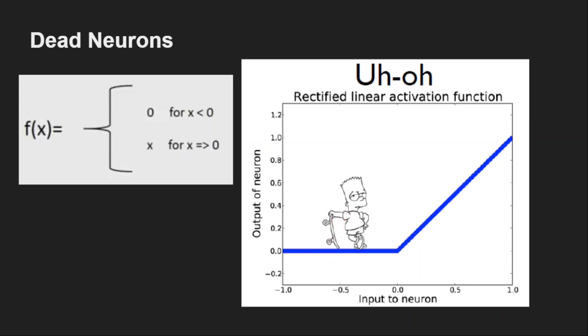The dying ReLU problem is solved by other variants of ReLU like leaky ReLU, exponential linear unit, parametric ReLU, randomized ReLU, etc. I have shared the link in the description below.